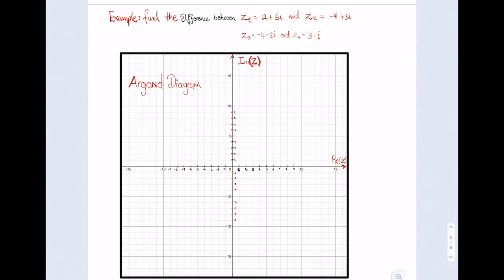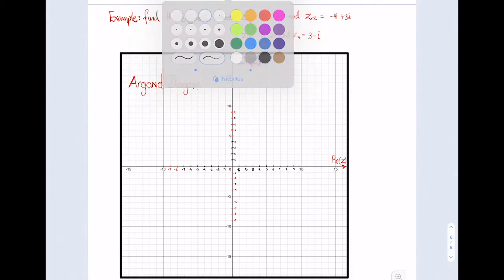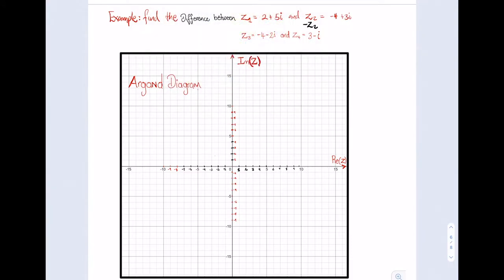So here, when we talk about the difference between two complex numbers, it is still a sum, but the question is the sum of what? For example, number one, we have find the difference between Z1 equals 2 plus 5i and Z2 equals minus 4 plus 3i, which are basically the same complex numbers from our previous example. But now we're finding the difference. To find the difference, we need a negative Z2, which is equal to 4 minus 3i. The principle here that we're using is that Z1 minus Z2 is actually equal to Z1 plus a negative Z2.